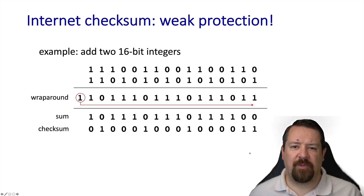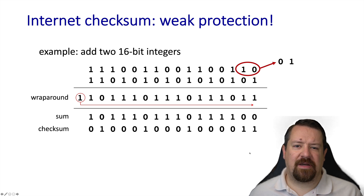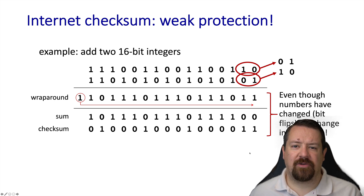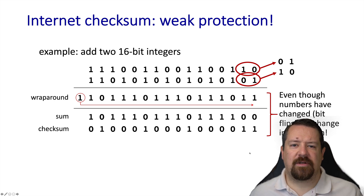Now we'll see why this method provides only weak protection for the contents of the message. Say that in transit, two bits got flipped — the two low-order bits of the first integer. But perversely, another two bits got flipped as well — the two low-order bits of the second integer. These four bit flips cancel each other out, so the math all works out exactly the same, and on the receiver side the checksum will look valid. Internet checksums are therefore considered quite weak and not a reliable means of protecting data. For high confidence, applications need to perform a more complex method of data validation, such as computing a CRC.